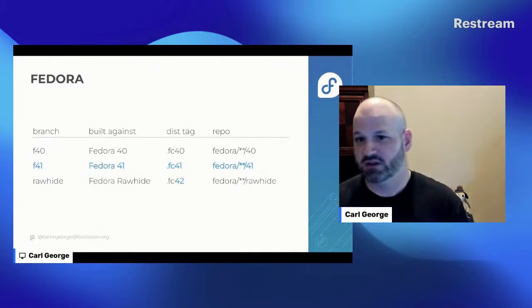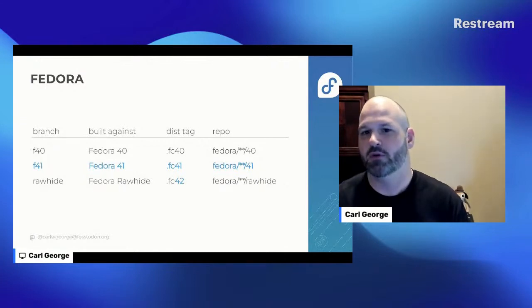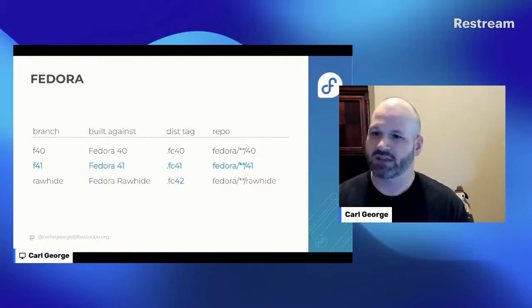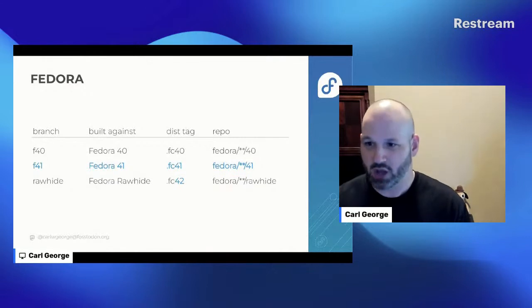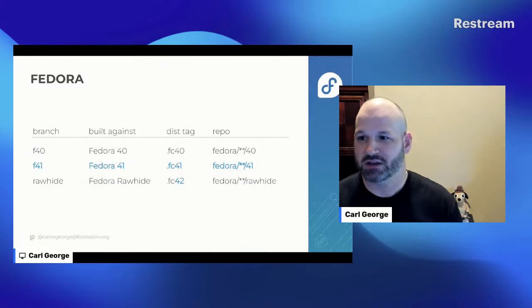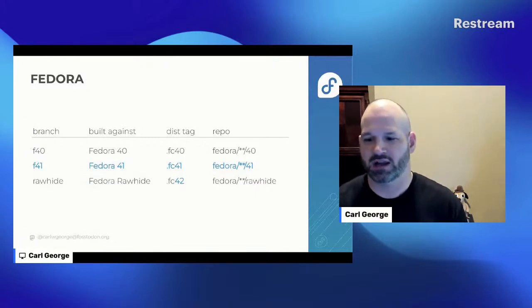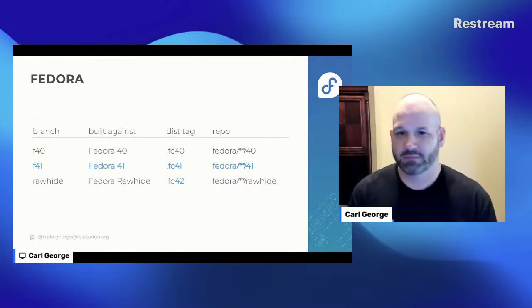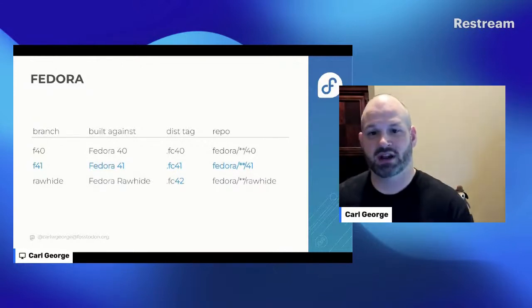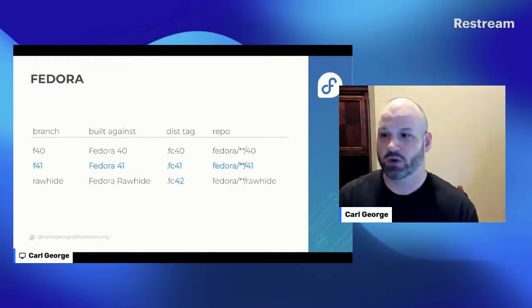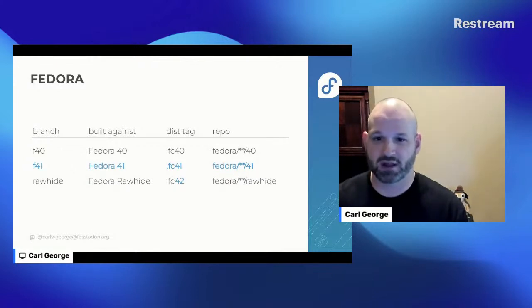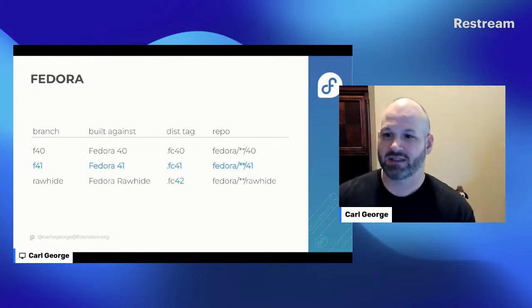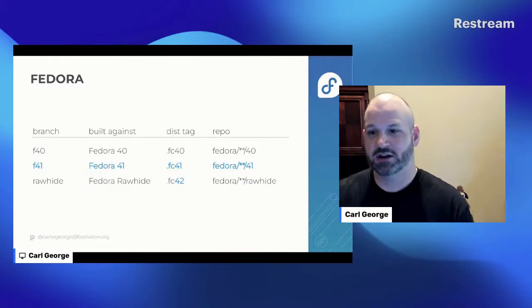Looking at Fedora branching in a similar chart style: we've got f39, f40, and a rawhide branch for package sources, built against corresponding releases. Notably, the rawhide branch when built against Fedora Rawhide gets an fc41 dist tag, because rawhide reflects the content going into the next release of Fedora. That should sound familiar to what I've been saying about CentOS Stream - it reflects the content going into the next RHEL minor version. That's foreshadowing for how we landed on setting up EPEL 10. A really key thing I liked about Fedora: builds done in rawhide, if you don't do anything else, are just inherited into the next release.